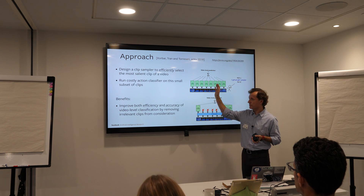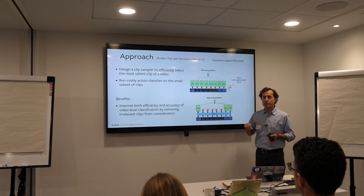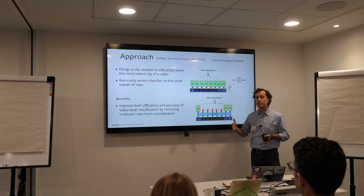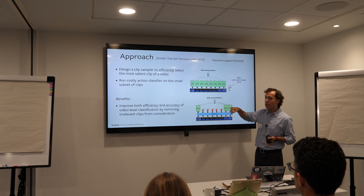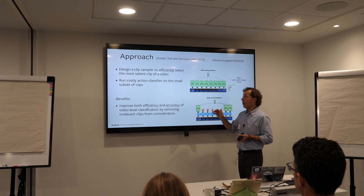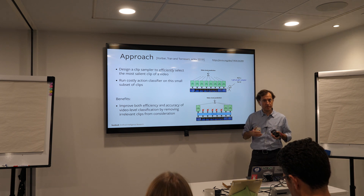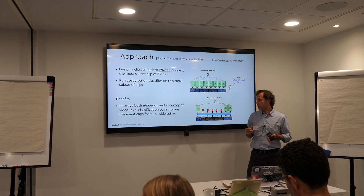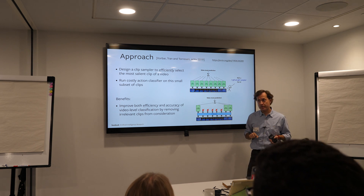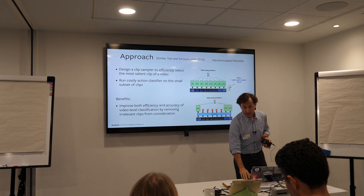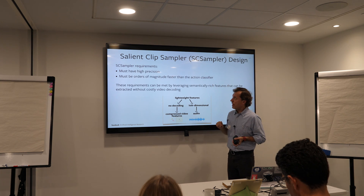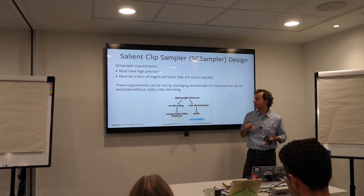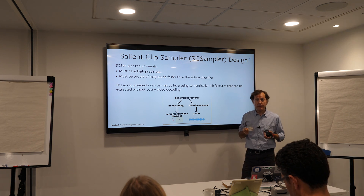The solution we propose is a simple two-stage approach: first apply a very lightweight model to identify the most relevant clips, then evaluate the more expensive classifier on only those selected clips. This produces dramatic gains in speed-up as well as some gains in accuracy, because we remove detrimental clips. We call the lightweight model SAMPLER — Salient Clip Sampler — designed to be orders of magnitude faster than the clip classifier, while still being able to capture saliency.